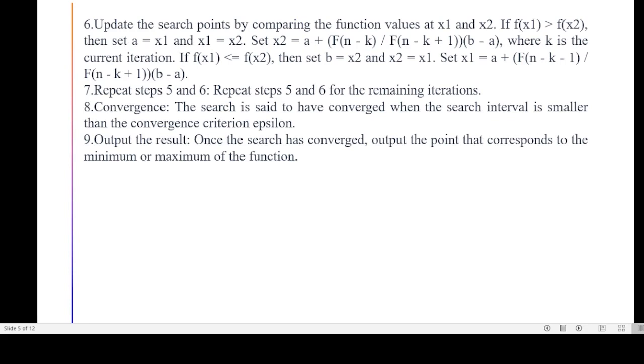Then we repeat the same fifth and sixth steps for remaining iterations. When the search interval is smaller than the convergence criterion epsilon, then the search is said to be converged. When it is converged, the output point that corresponds to the minimum or maximum function is given.